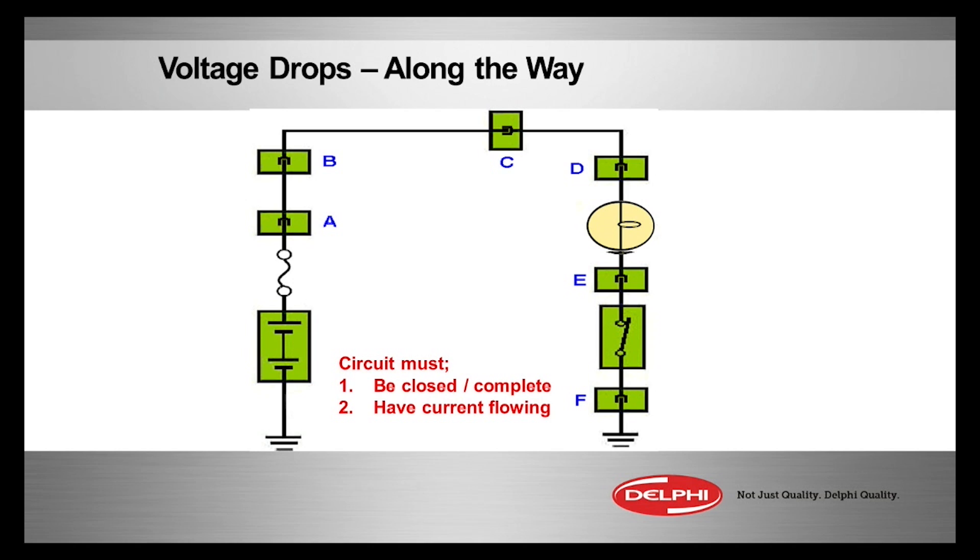If you go between D and E, we'll do that now, we should see the source voltage. The only voltage drop we should get is the voltage drop across that load source voltage. It's not 12 volts. It's four. That means we've got an eight volt voltage drop somewhere else.